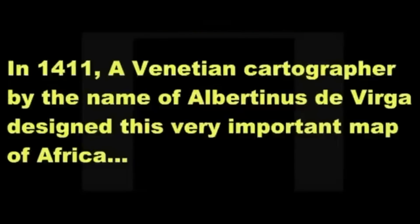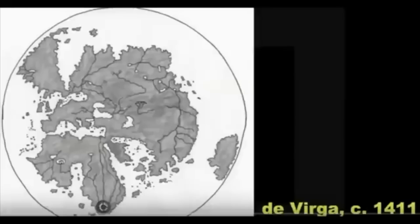Now we're going to go over and see exactly where these four rivers could be today, and also where they once connected. We've discussed this map that's well over 600 years old. In 1411, a Venetian cartographer by the name of Albertinus de Verga designed this very important map of Africa. This map is key in helping us find the four rivers of Eden today.